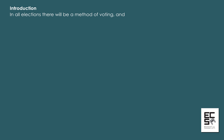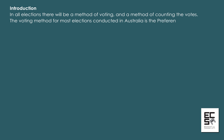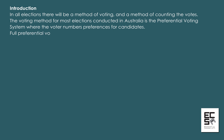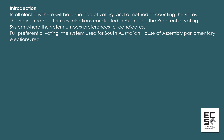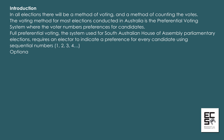In all elections, there will be a method of voting and a method of counting the votes. The voting method for most elections conducted in Australia is the preferential voting system, where the voter numbers preferences for candidates. Full preferential voting, the system used for South Australian House of Assembly parliamentary elections, requires an elector to indicate a preference for every candidate, using sequential numbers 1, 2, 3, 4.